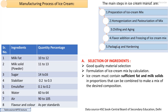We have already discussed in detail the ingredients and their functions, including the selection of dairy and non-dairy ingredients as per the type of ice cream. Two main parameters must be considered during standardization of the ice cream mix: the fat and SNF ratio.